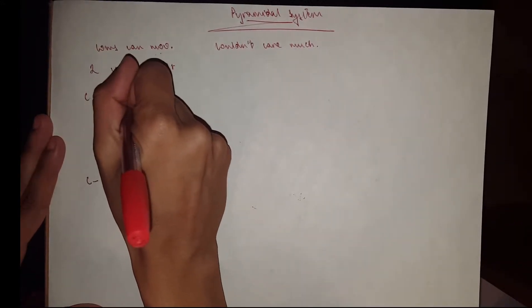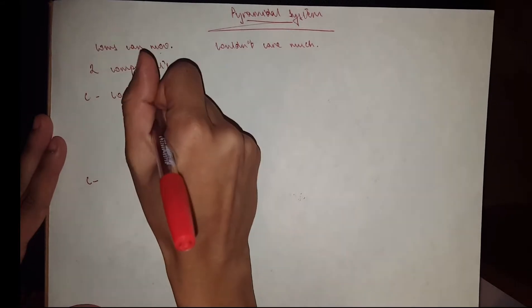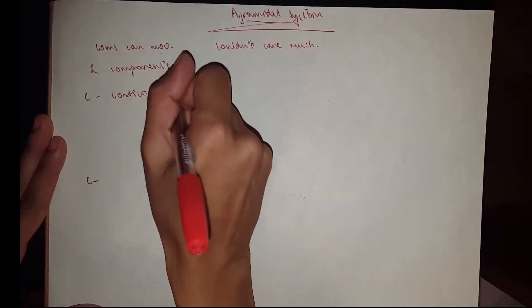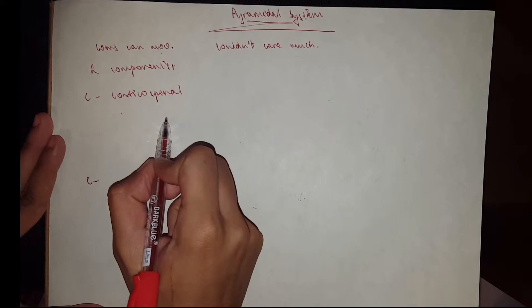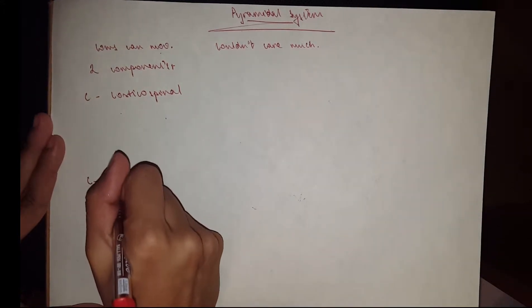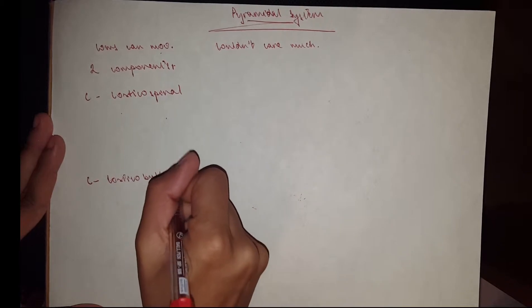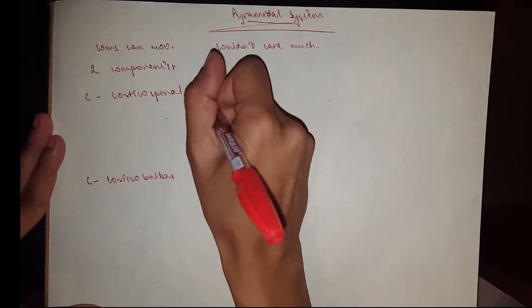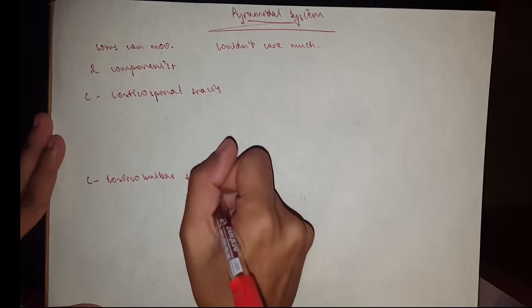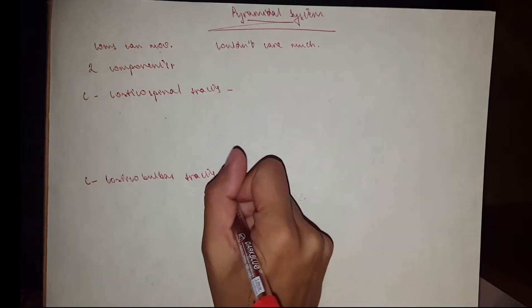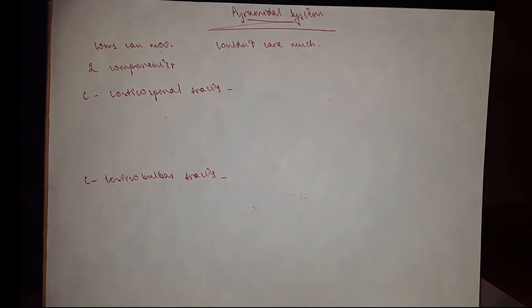The first C is corticospinal. The name tells you that it goes from the cortex to the spinal cord. And the second one would be corticobulbar, and these two are tracts, so they have to go from the brain to the spinal cord through the brainstem.